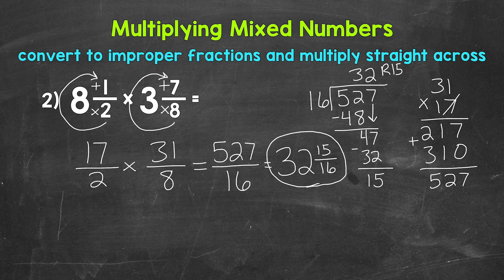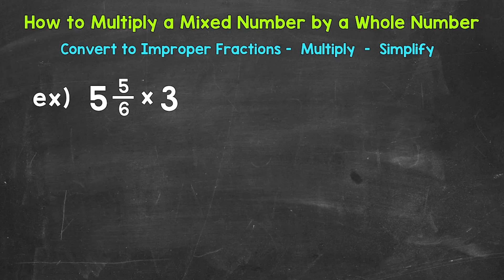There's how to multiply a mixed number by a mixed number. Let's move on to multiplying a mixed number by a whole number. Let's jump into our example where we have 5 and 5 sixths times 3.